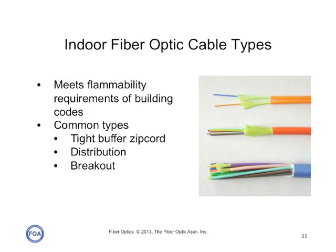We use cables to protect the optical fiber when we install them in the real world. Indoor cables have to meet flammability standards so that they don't cause or contribute to fires. Typical types used in indoor cabling are what we call tight buffer cables, like the zip cord at the top, the distribution cable in the center, and the breakout cable, which is just a large number of simplex cables, down at the bottom.